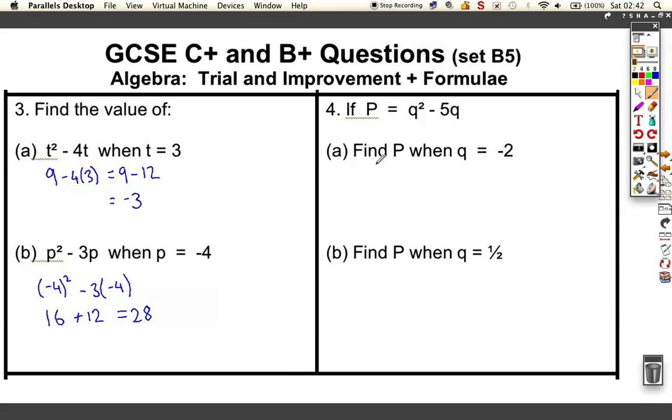Number 4, same idea except we're going to be careful using negative numbers. We're going to do (-2)² - 5 lots of -2. So -2 squared is +4, negative times negative, and this is also going to be positive because you've got negative times negative, +10. So you get the answer 14.